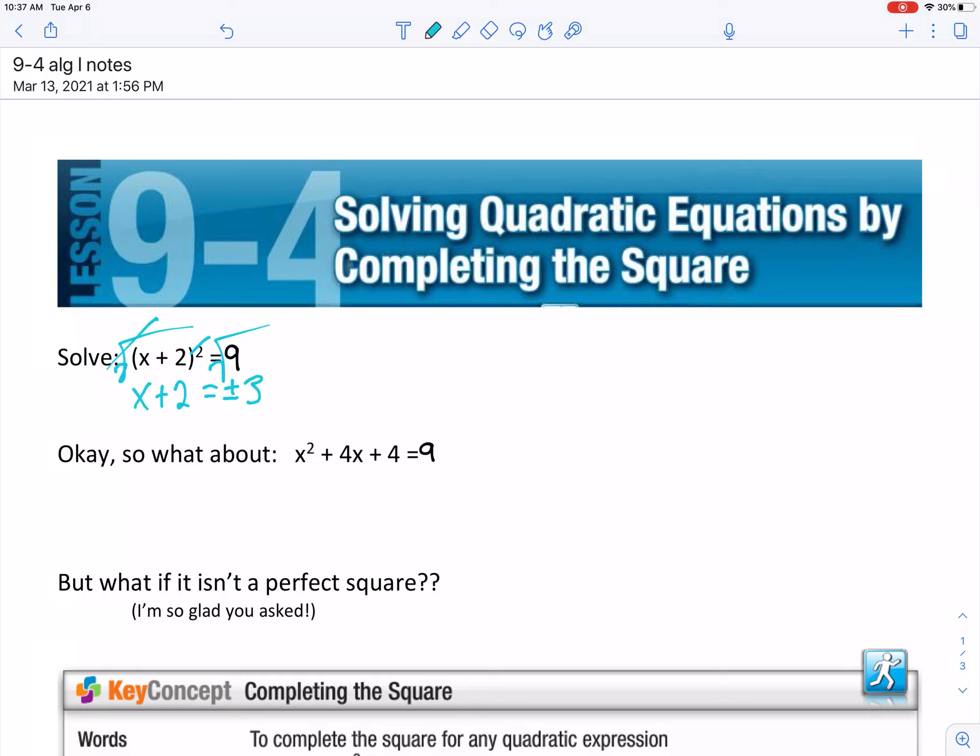And what that does is actually give you two equations now. The first equation is going to be x plus 2 equaling that positive 3. And the second equation is going to be that x plus 2 equaling the negative 3. And from here it should be a pretty straightforward formula to solve. So on the top one I'm going to get x equals 1, 3 minus 2 is 1. On the bottom one I'm going to get negative 5, negative 3 minus 2 is negative 5. And those are your answers.